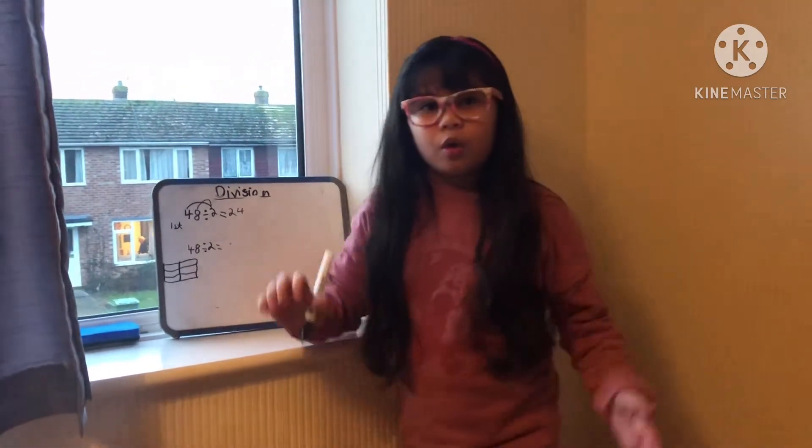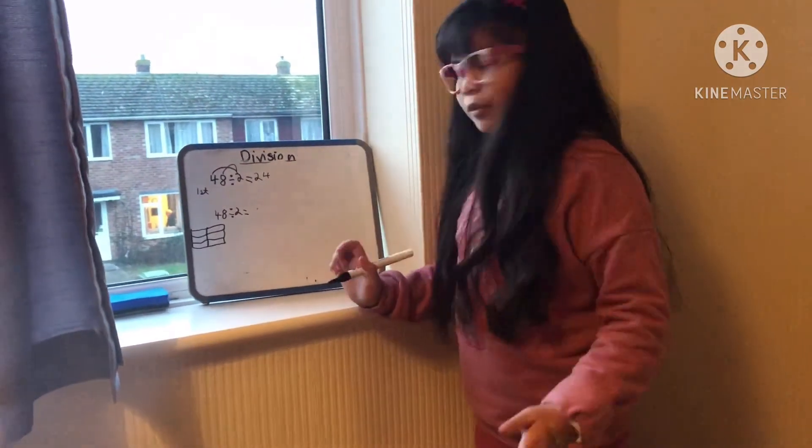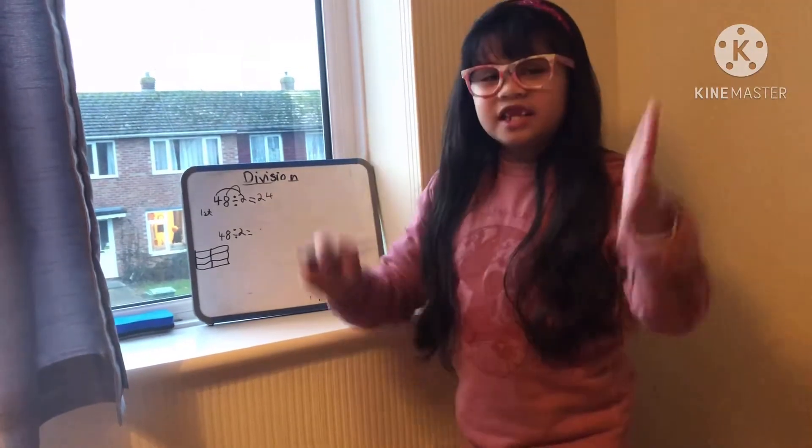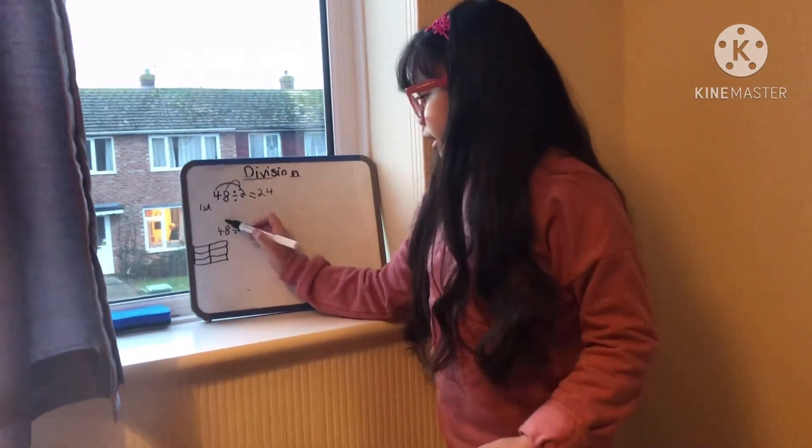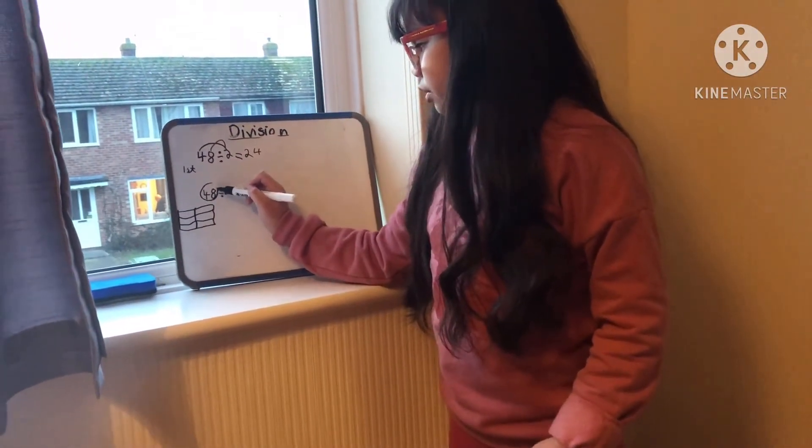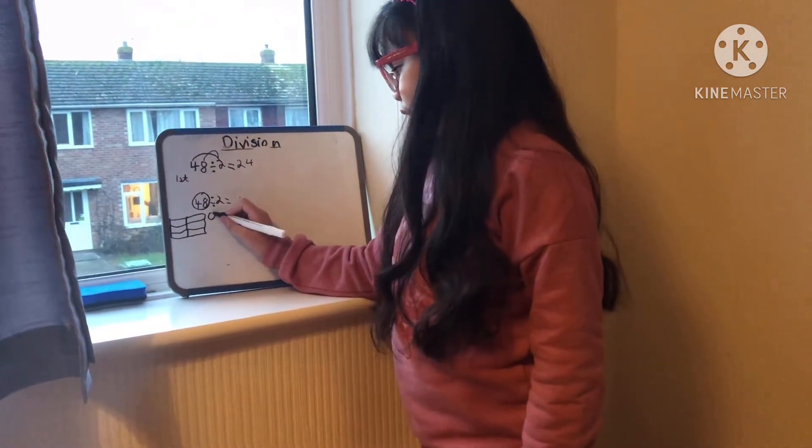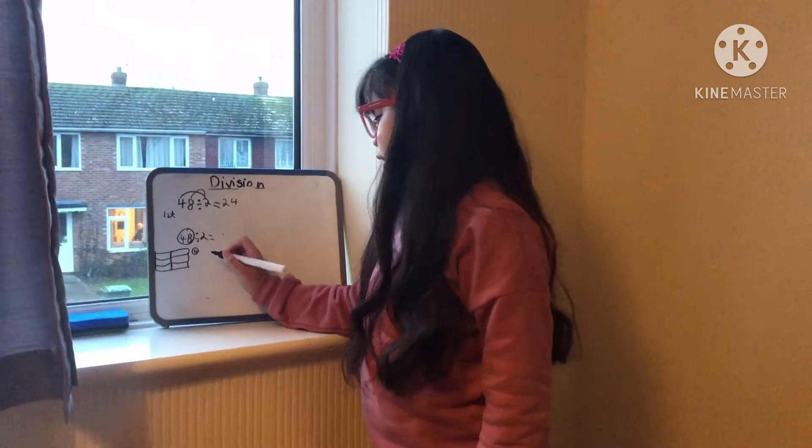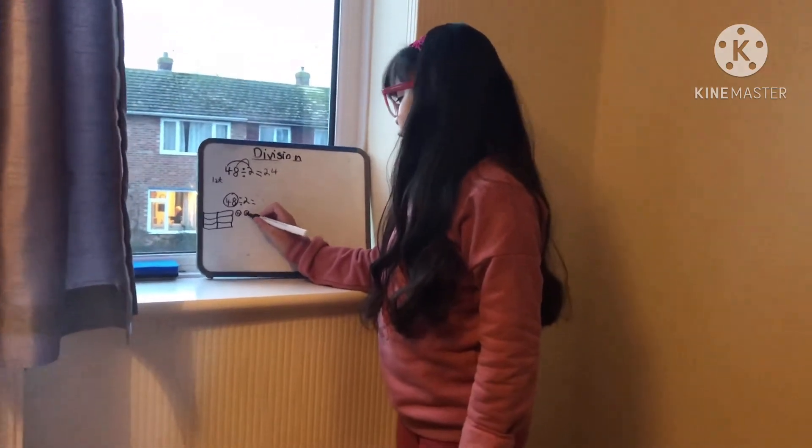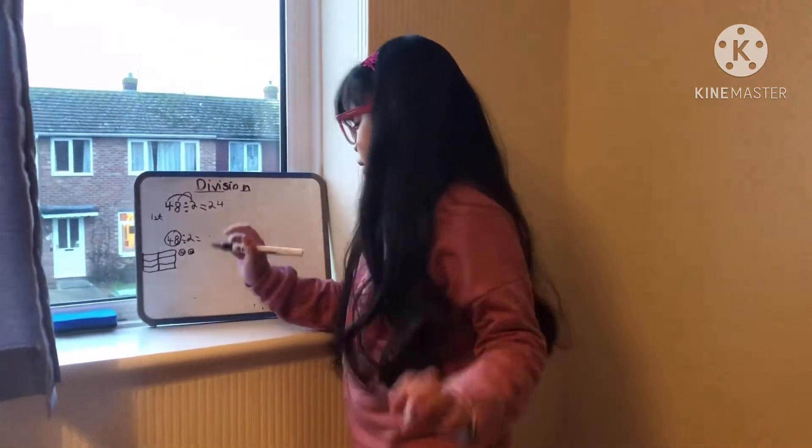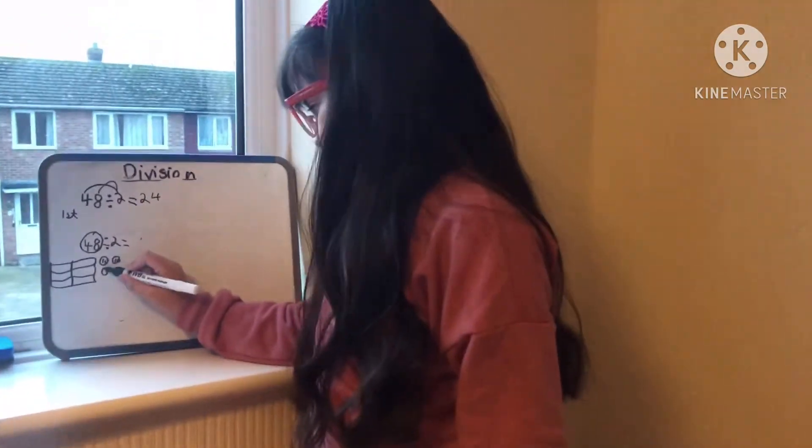So what we have to start is the tens column. We need to make it till 48, so we have 10, then 20 because 10 plus 10 is 20, 30, and 40.